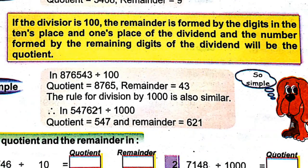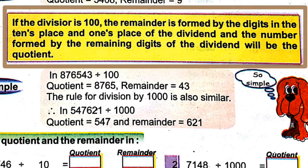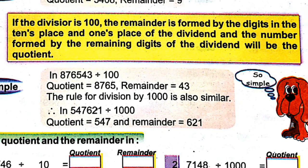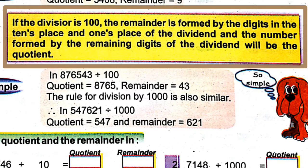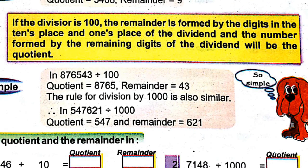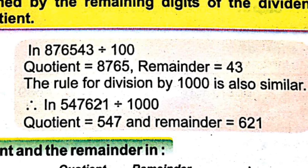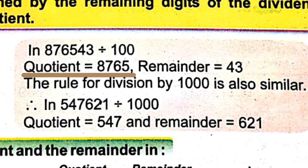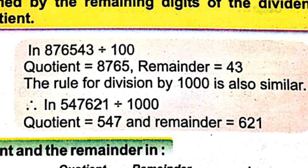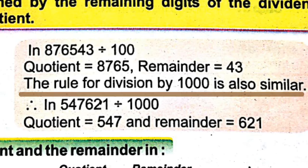If the divisor is 100, the remainder is formed by the digits in the tens and ones places of the dividend, and the number formed by the remaining digits is the quotient. For example, 876543 divided by 100: the tens and ones digits are 4 and 3, so the remainder is 43, and the remaining digits 8, 7, 6, 5 form the quotient 8765.